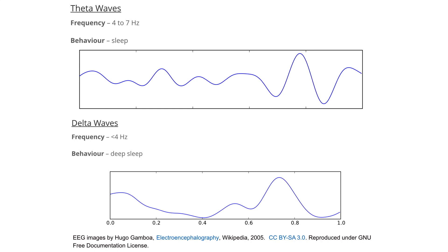One more important thing about EEG waves is their power or amplitude — the height of the wave. Higher frequency waves have a smaller height or power, and as the waves slow down, their power increases. So delta waves have a bigger amplitude than beta waves. This is an important fact to know when interpreting the CSA.